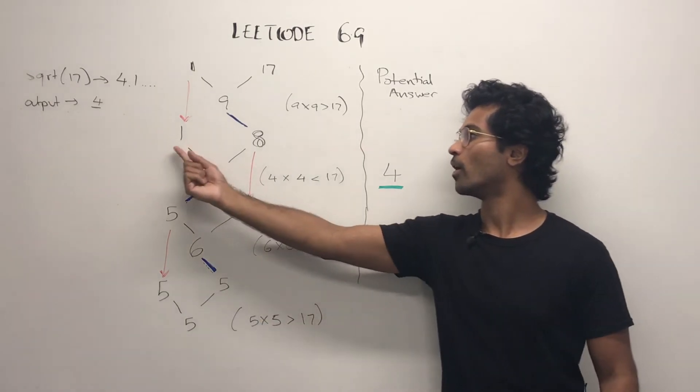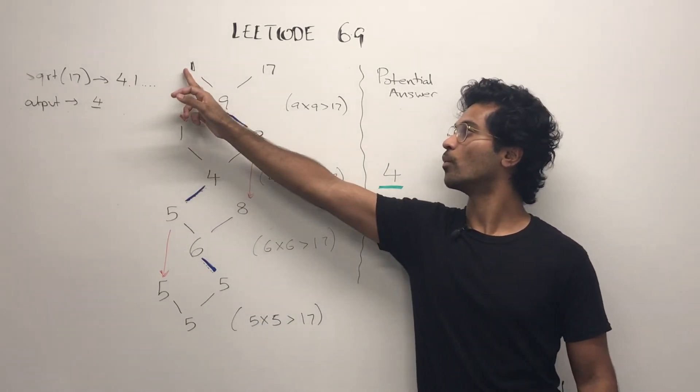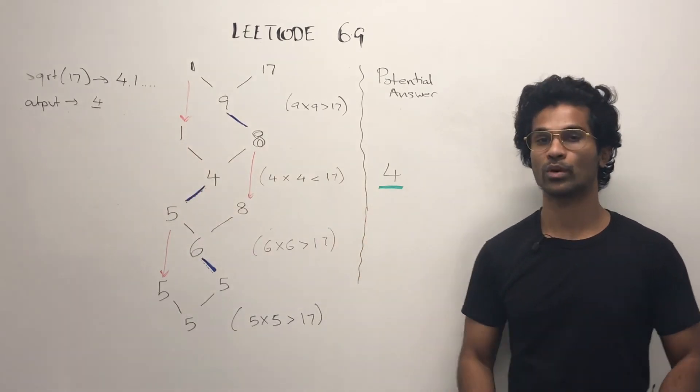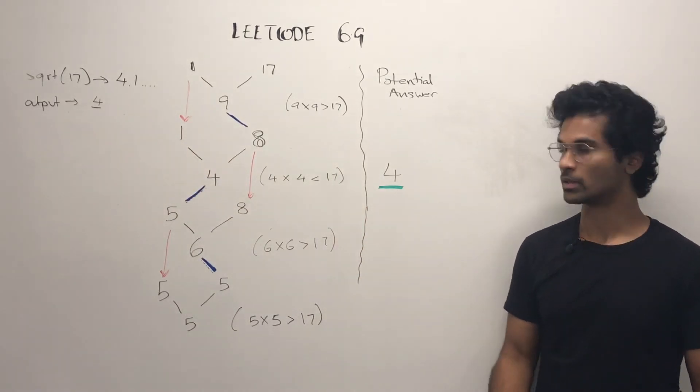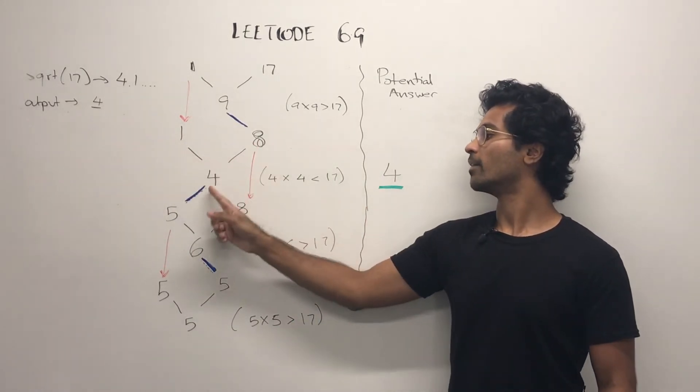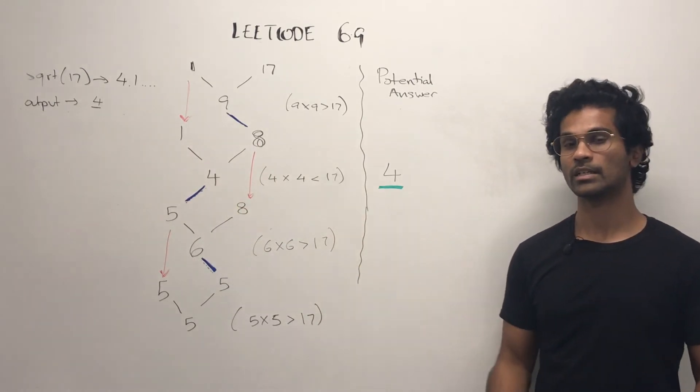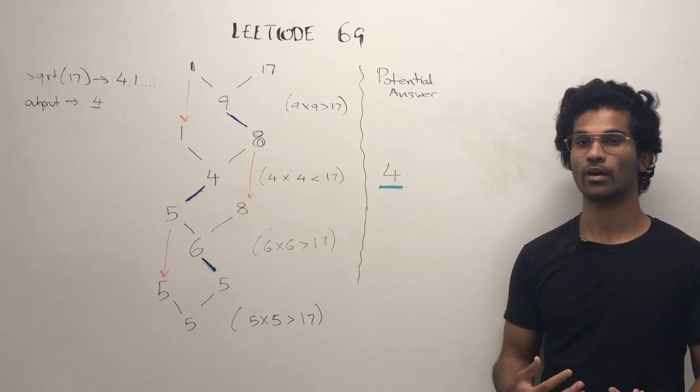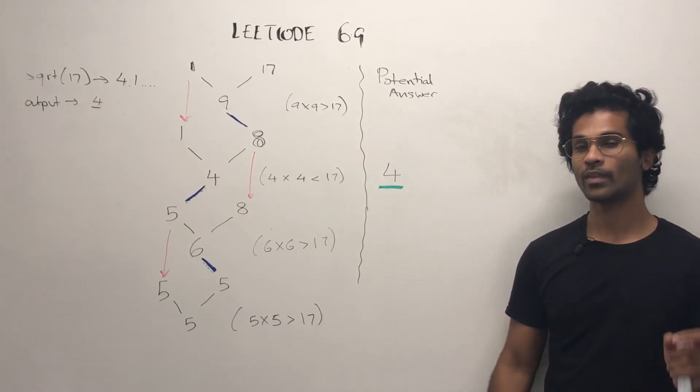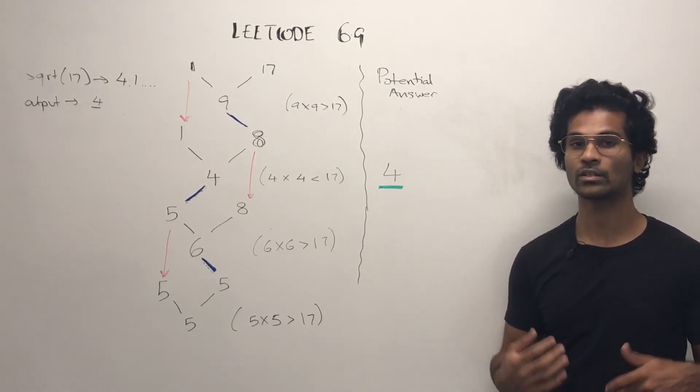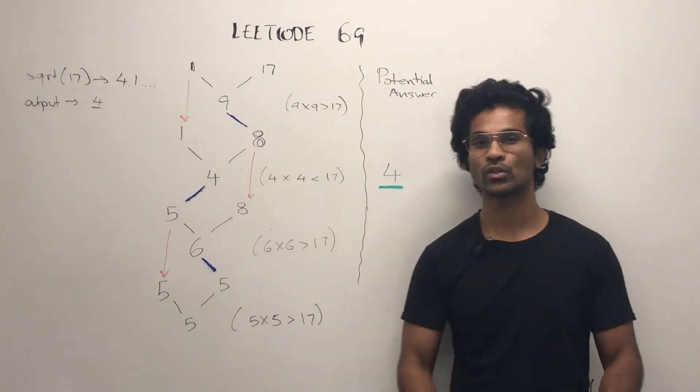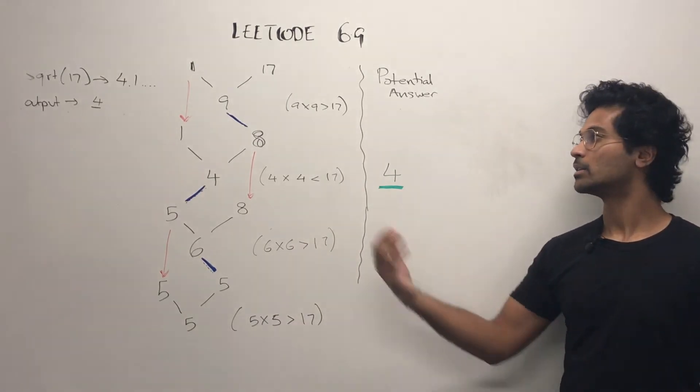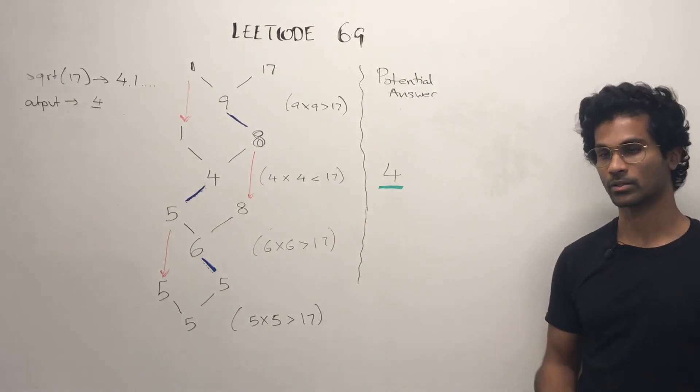Next, we take 1 and 8, use 1 again from the top because we're not changing the lower limit in this iteration. So 1 and 8 have a midpoint of 4, and then we see, is 4 times 4 the square root of 17? Well, not exactly, but it is smaller than 17. So we have a good estimate. It's pretty close, so we take that as one of the potential answers.